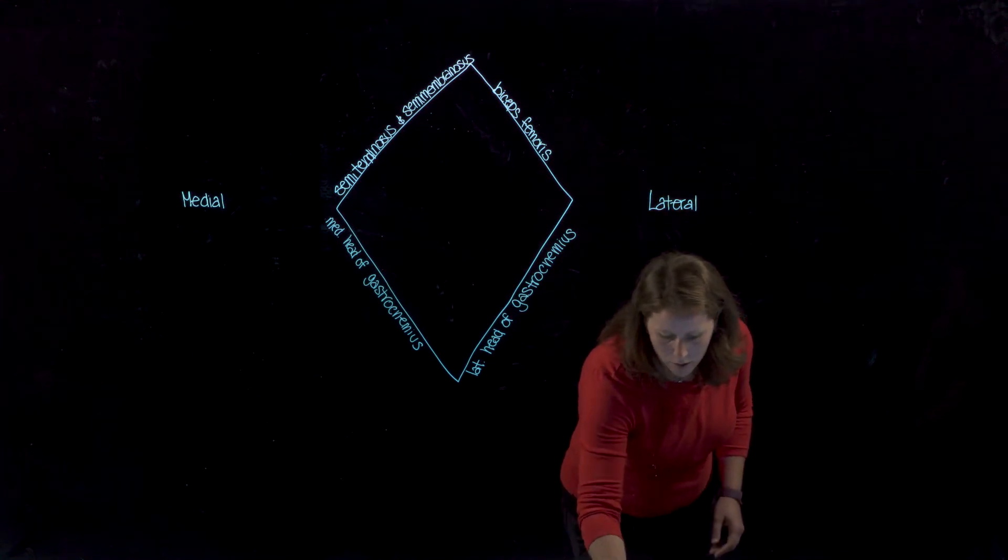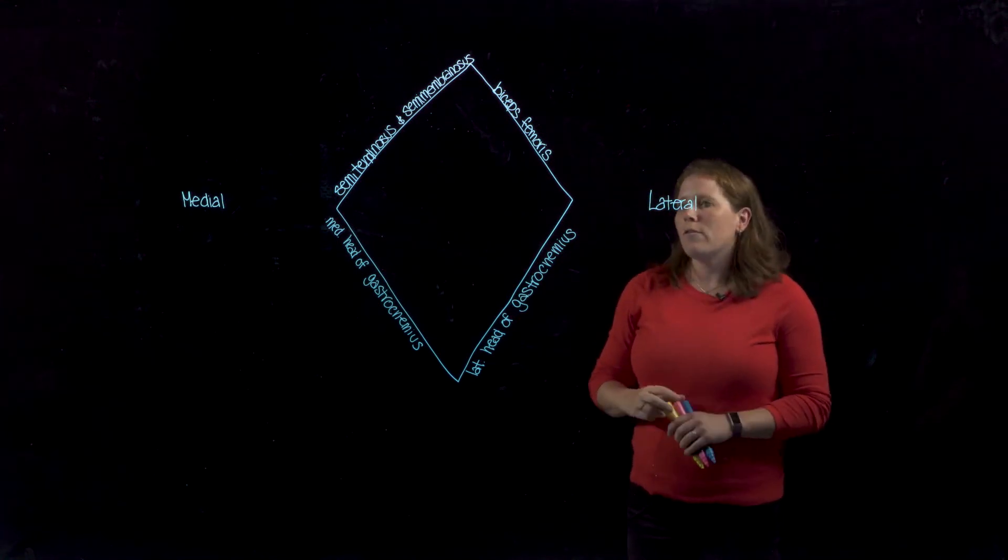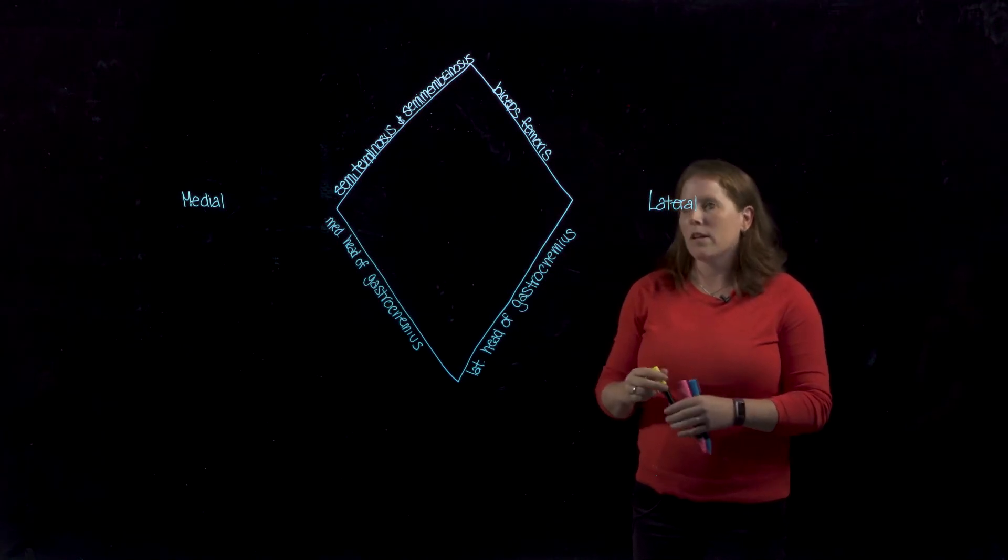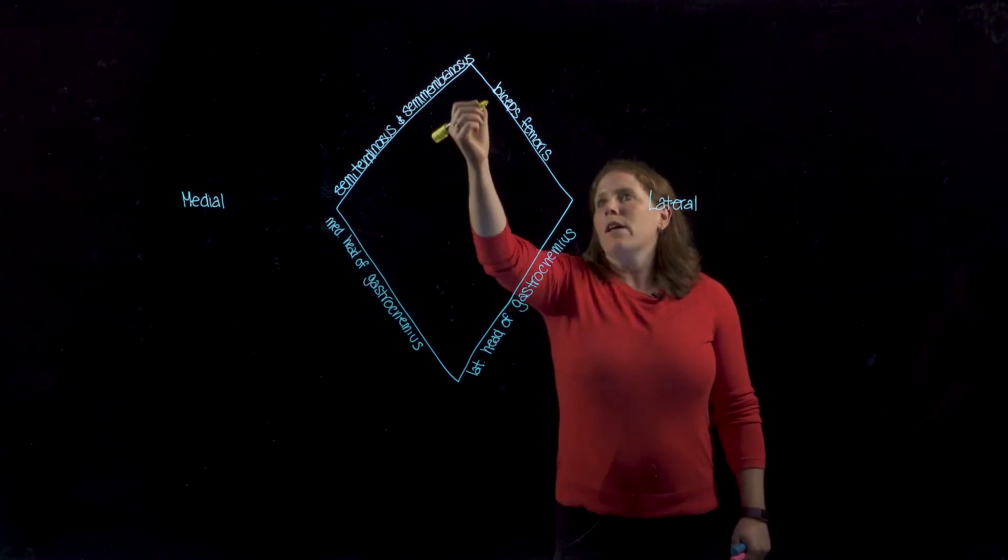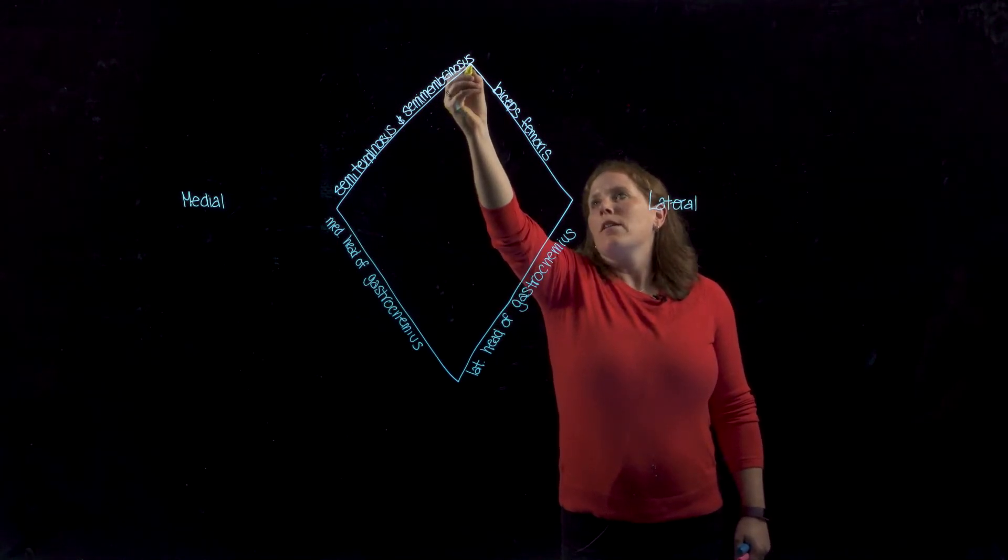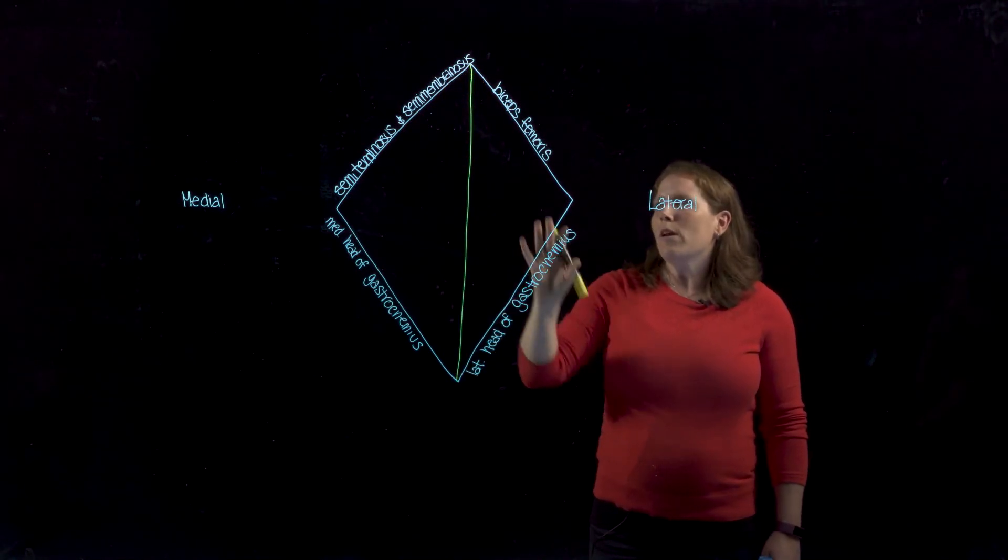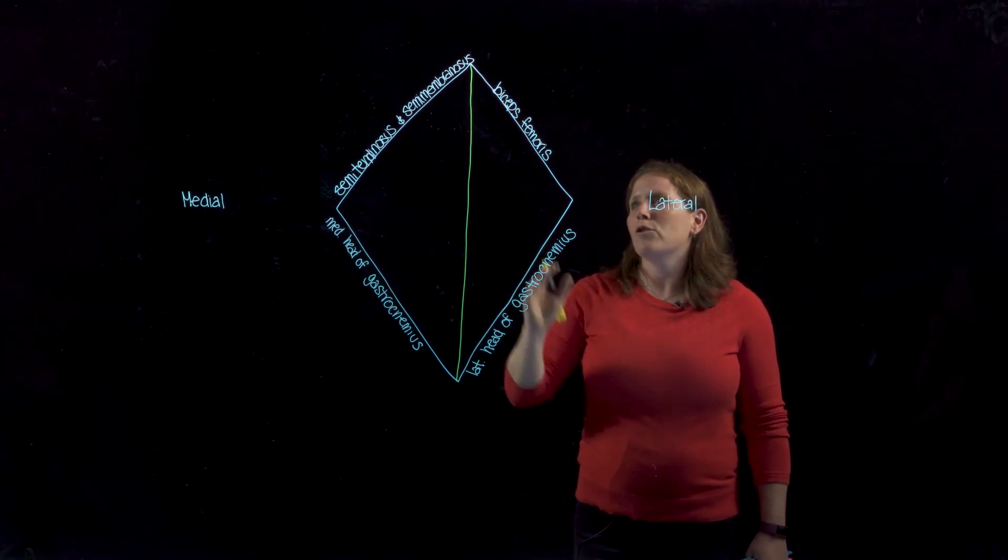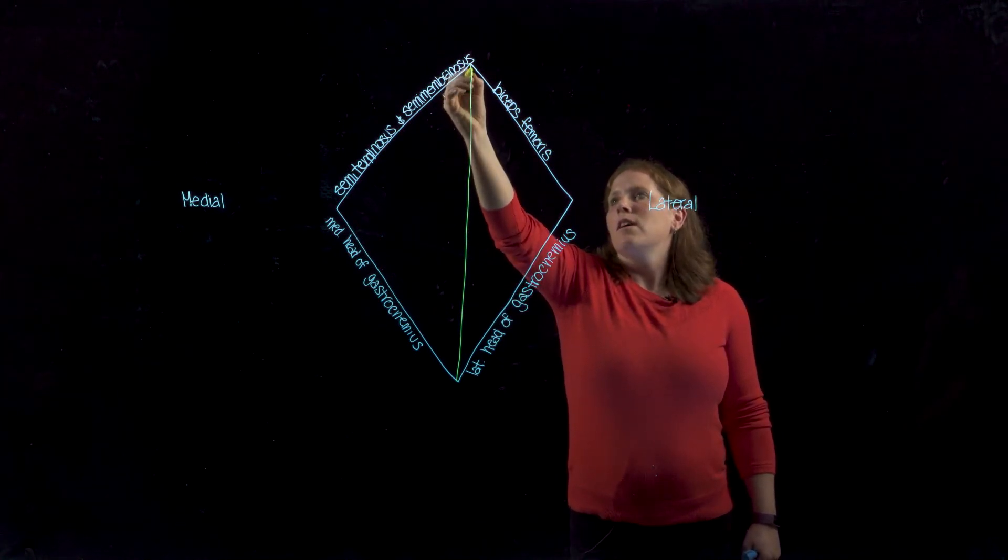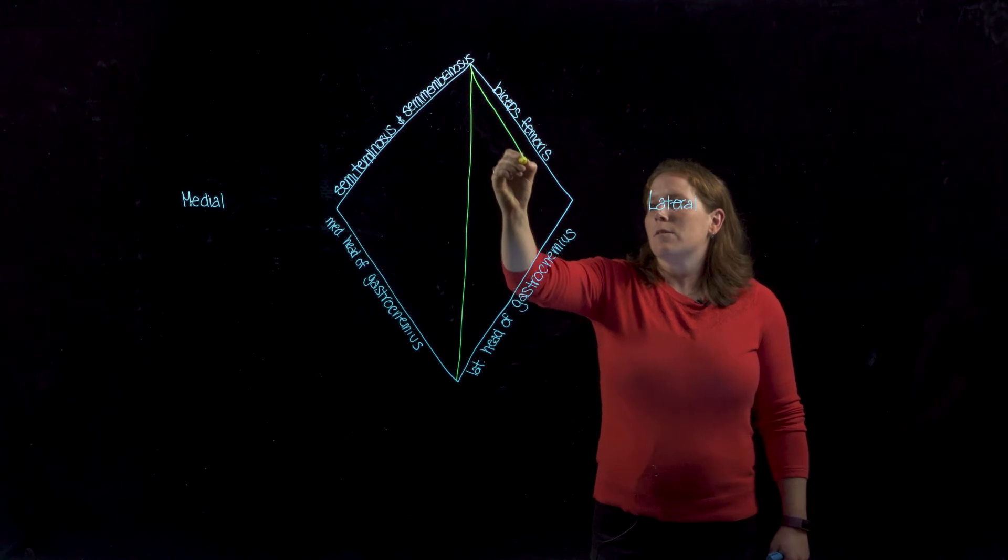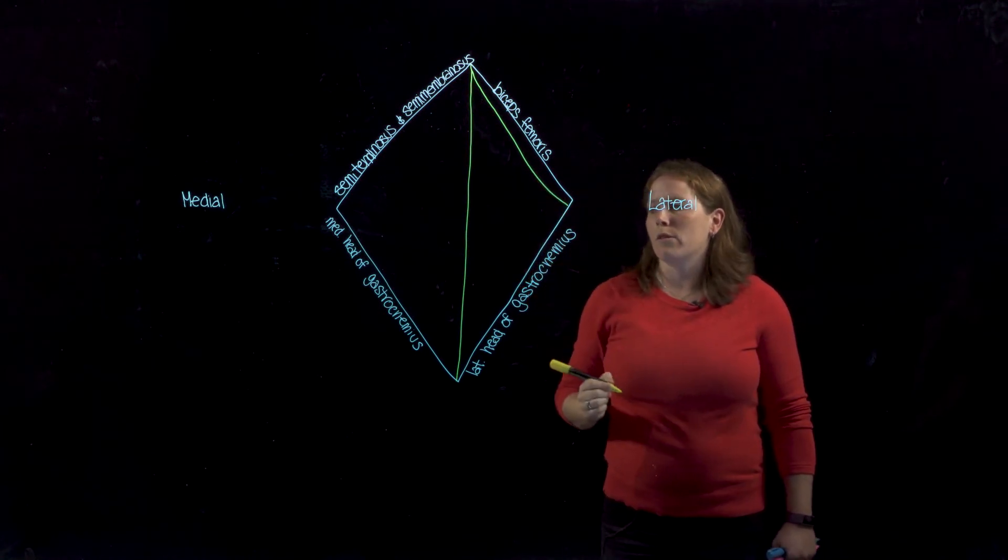Now it's important that we look at the structures that are found within this popliteal fossa. So entering in right through the midline is going to be the sciatic nerve. But at some point, usually just proximal to the popliteal fossa, the sciatic nerve will have split into its two component parts.